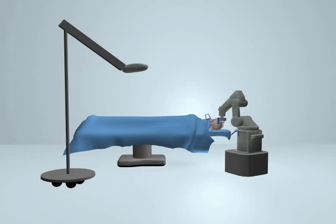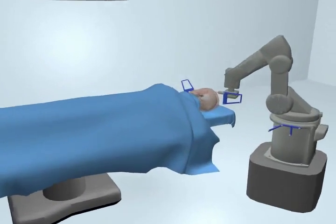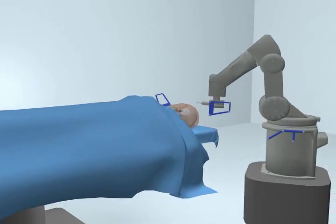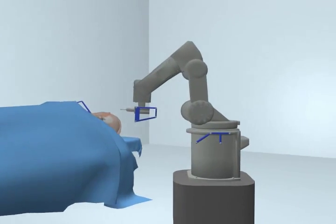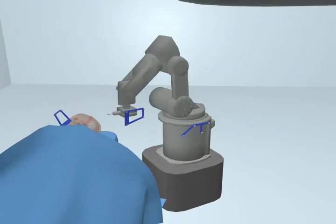In the operating room, the robot is positioned next to the patient. The tracking system overlooks the surgery. It tracks both the position of the robot and the position of the patient.